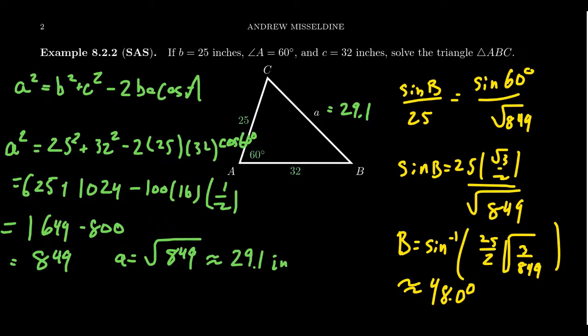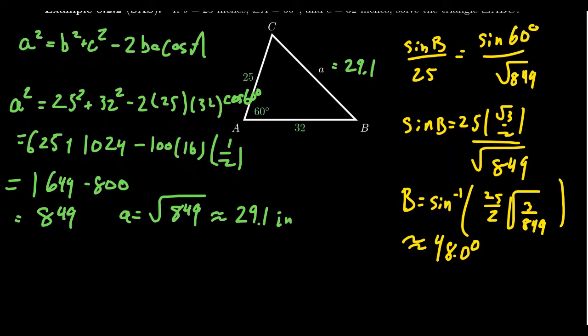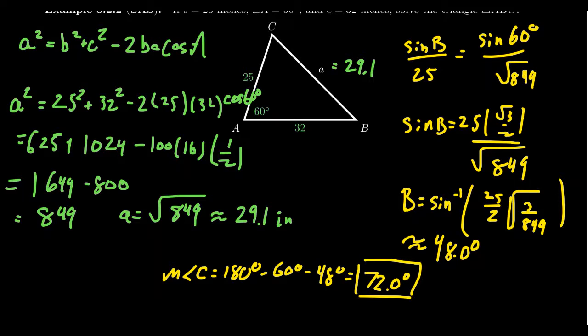And then once you know that A was given as 60 degrees, and since we just found out B was 48 degrees, you can then find the measure of angle C to equal 180 degrees minus 60 degrees minus 48 degrees, like so. And so we get that C would be 72.0 degrees as well. You can find out the missing information that way.